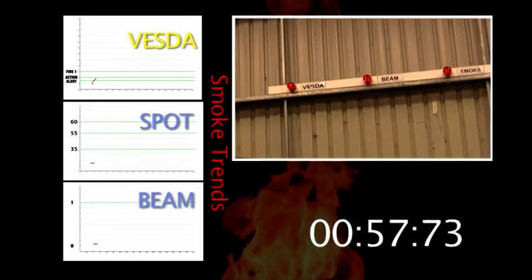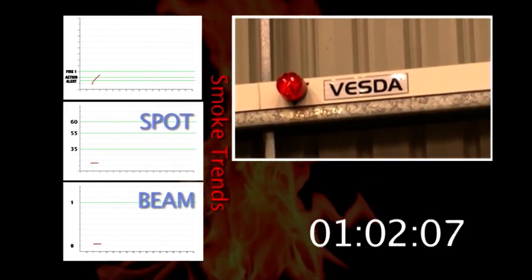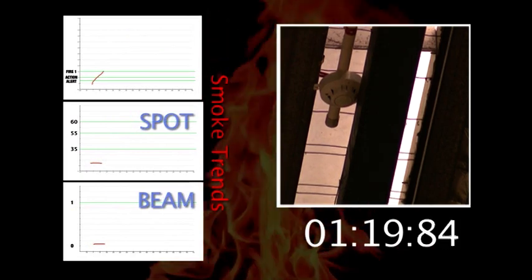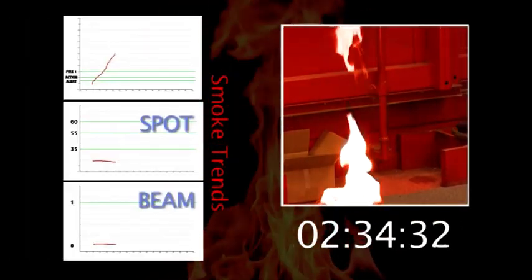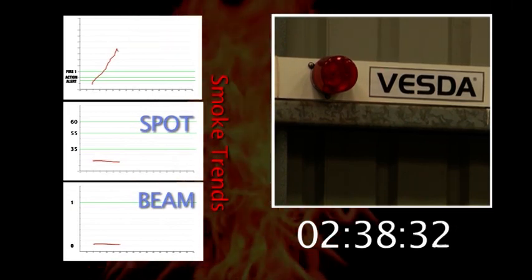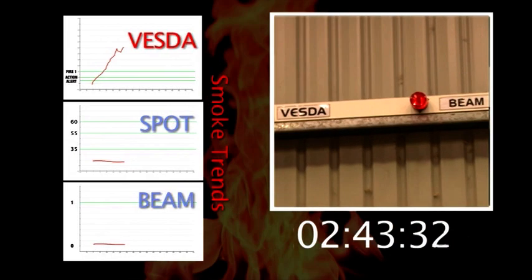In less than sixty seconds, the VESDA has already registered the presence of smoke and triggers the first alert after one minute eighteen seconds. At two minutes thirty-five seconds, the VESDA has triggered fire one alarm, while there is still no indication of smoke from the point or beam detectors.